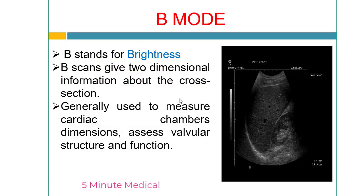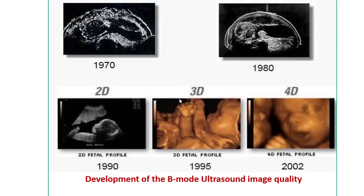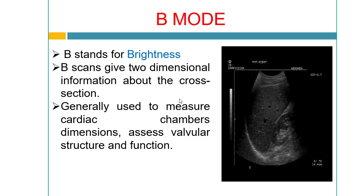B-mode — where B stands for brightness — is the most commonly used sonography method. B-scan gives a two-dimensional image and provides information about cross-sections. It is generally used to measure cardiac chamber dimensions, assess valvular structure, and obtain information about other functions.